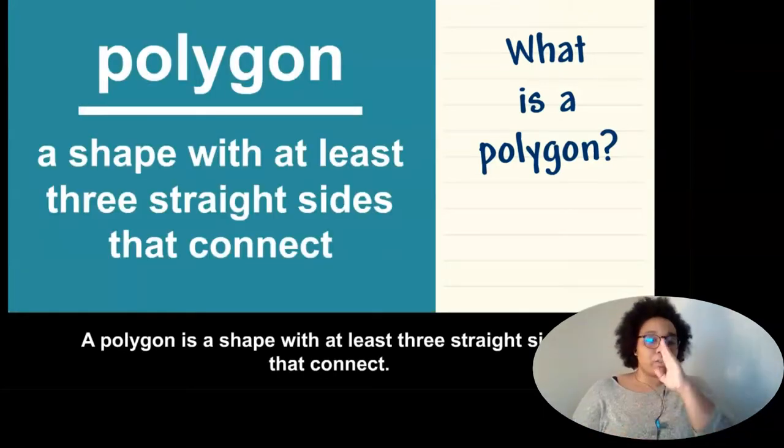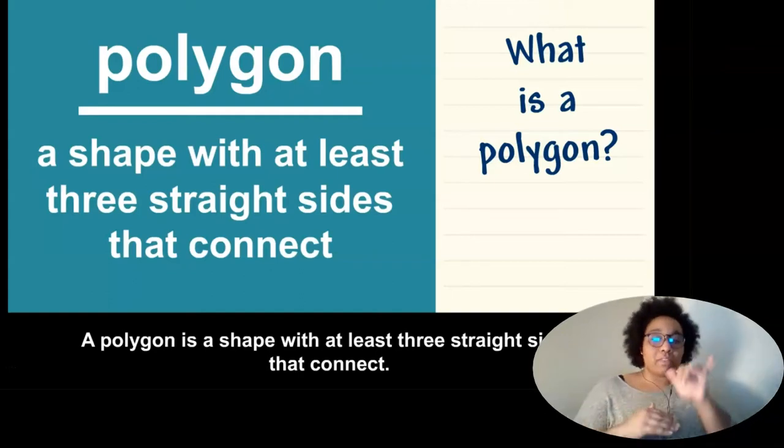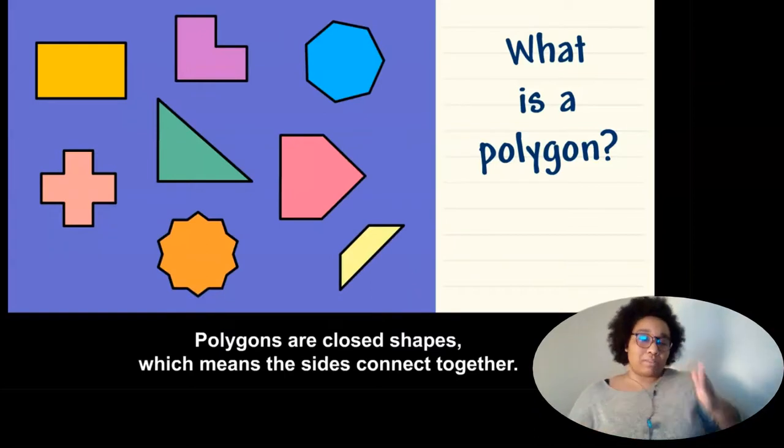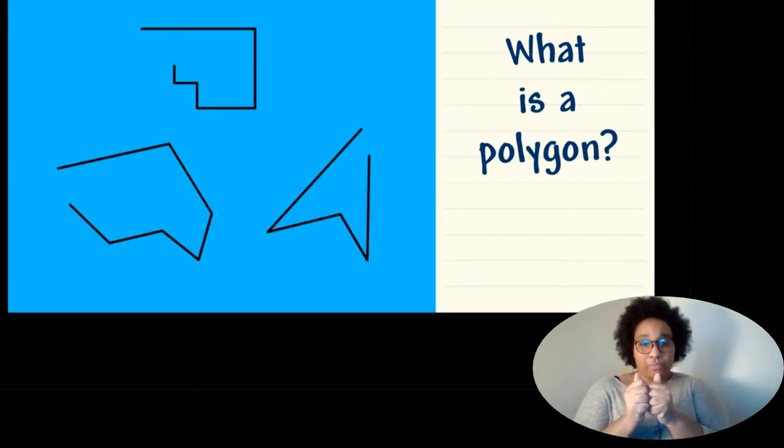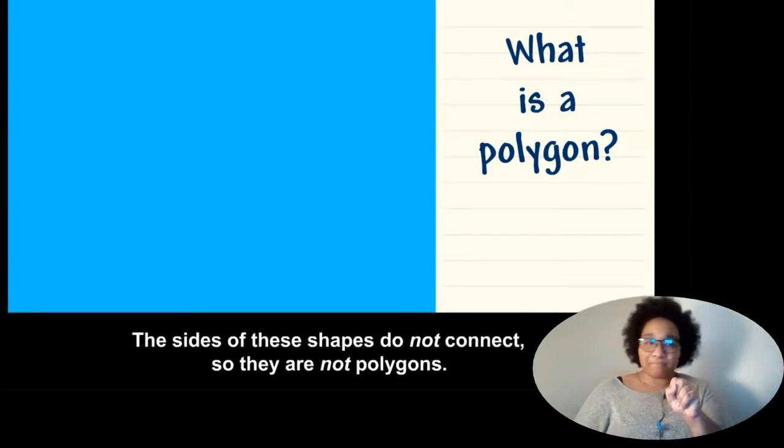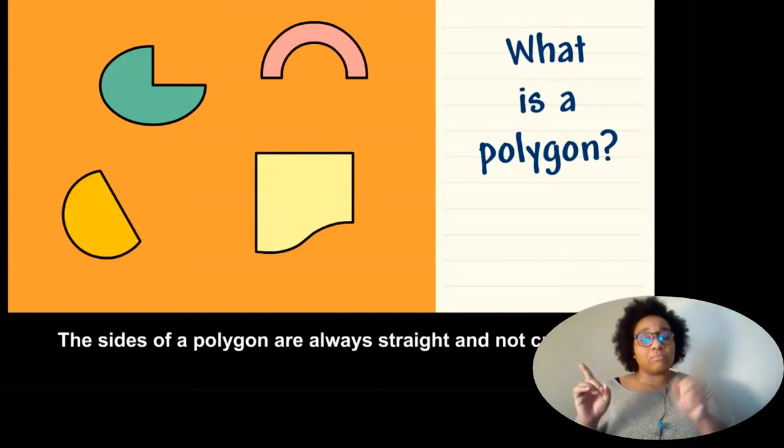A polygon is a shape with at least three straight sides that connect. Polygons are closed shapes, which means the sides connect together. The sides of these shapes do not connect, so they are not polygons.